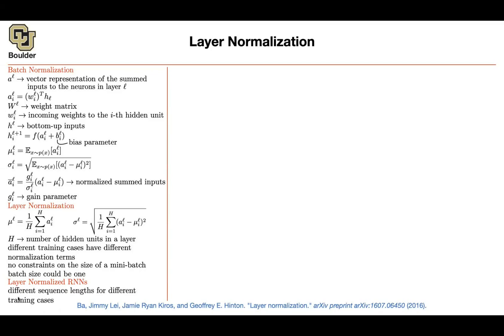Different training cases have different sequence lengths — effectively different depths. Even if you pad sequences with zeros, your statistics become inaccurate because it's just zeros being pushed through your network. The deeper you go, the less real data you have to work with. Most of those batch entries are going to be zero. So these statistics are not going to be accurate.